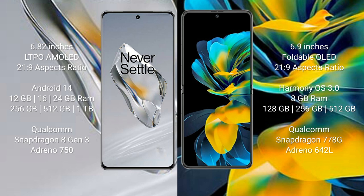The OnePlus 12 comes with 12GB, 16GB, or 24GB of RAM, and 256GB, 512GB, or 1TB of internal storage. It is powered by the Qualcomm Snapdragon 8 Gen 3 processor with an Adreno 750 GPU.